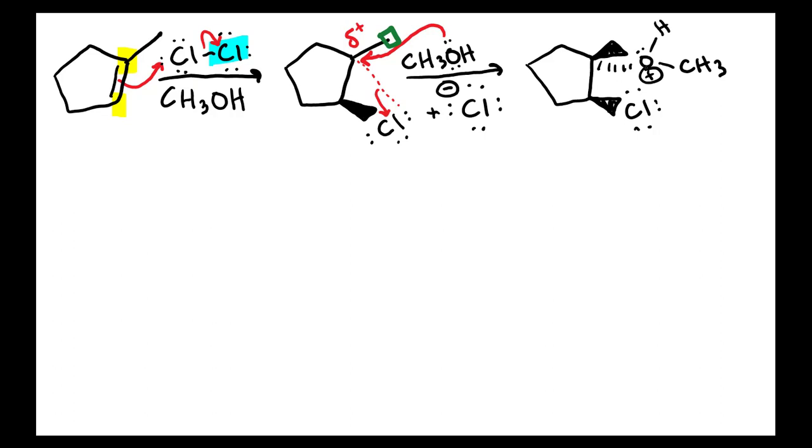So what you'll notice, just like we mentioned before, is the relationship here of this intermediate is anti. So the reason we have these as anti to each other is because we had that cyclic intermediate over here. So remember that triangular intermediate is going to cause the methanol to come in opposite the chlorine.